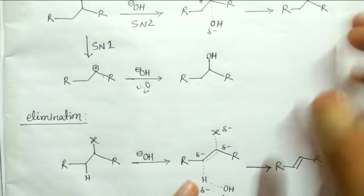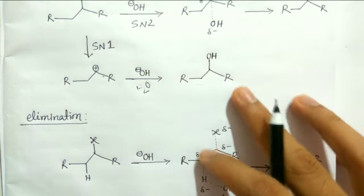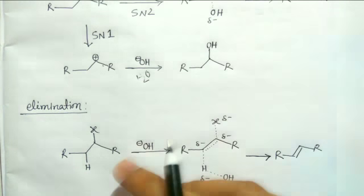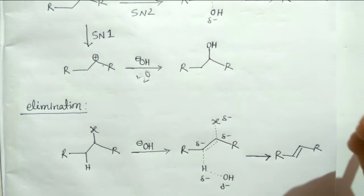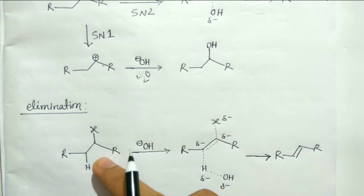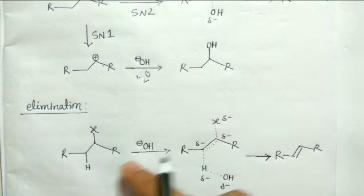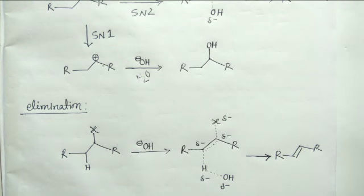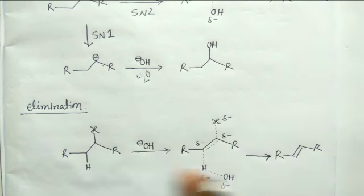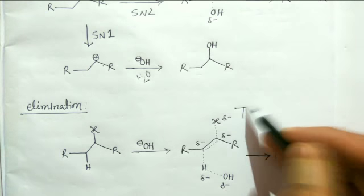Now let us look at the transition state for E2 elimination reaction. Generally we consider this reaction as E2 reaction because the substrate is perfect for E2 elimination reaction and if you use alkoxide or hydroxide it will do E2 reaction because it is a strong base. So in E2 reaction you can see this is the transition state.